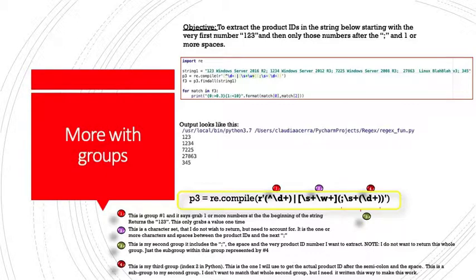We have that there in a character set. Then we have a group and a subgroup. Number three, this is our second group. It includes the semicolon, the space, and the very product ID I want to extract. Note, I don't want to return this whole group, just the subgroup within this group represented by number four. This is my third group, number four. This is the one I will use to get the actual product IDs after the semicolon and the space. This is a subgroup to my second group. I don't want to match the whole group, but I need it written in this way to make the whole thing work.